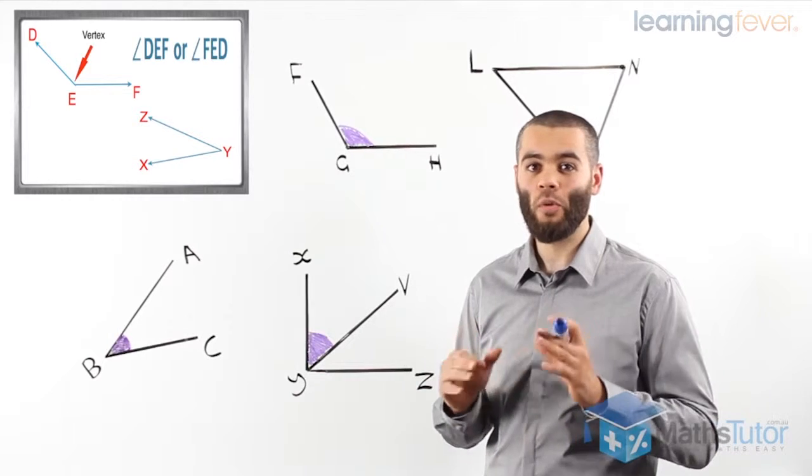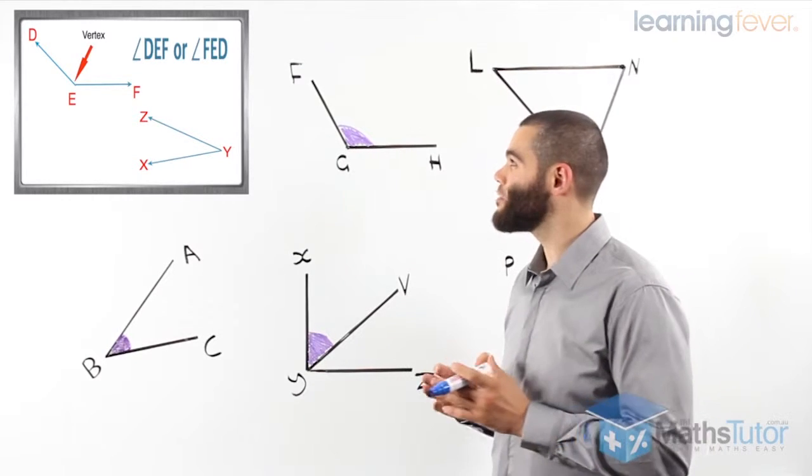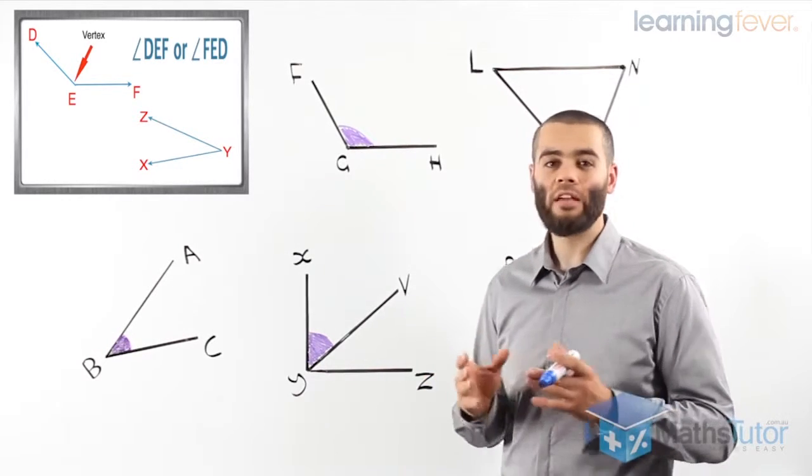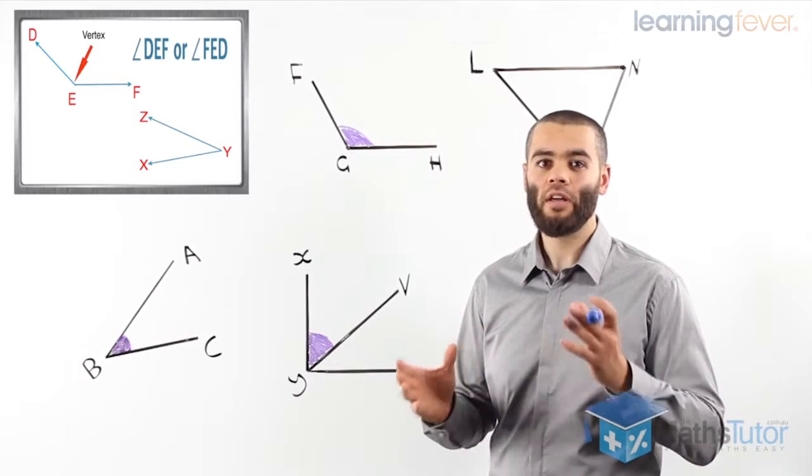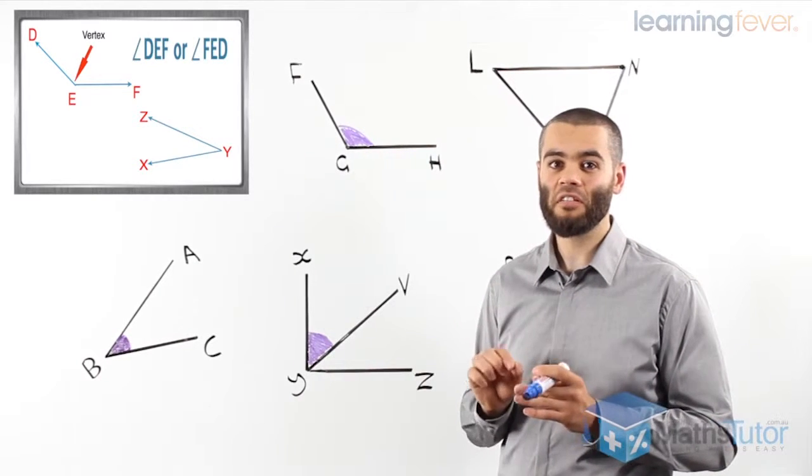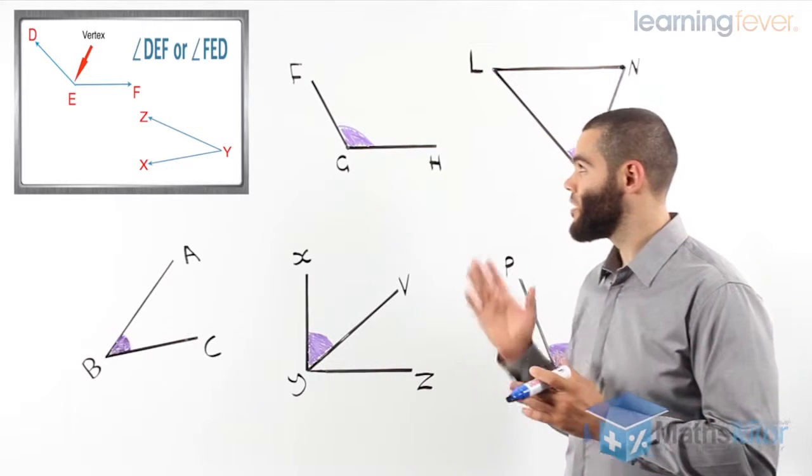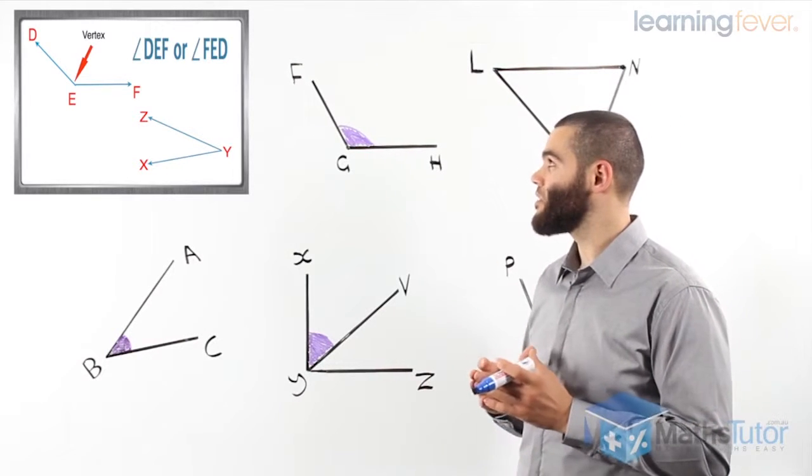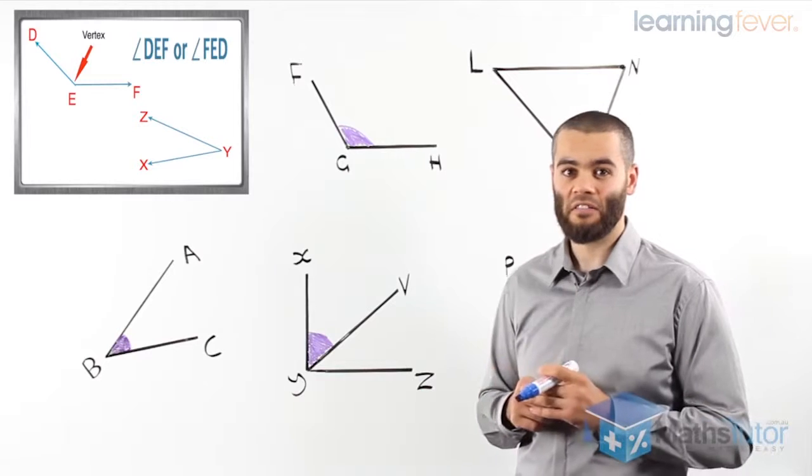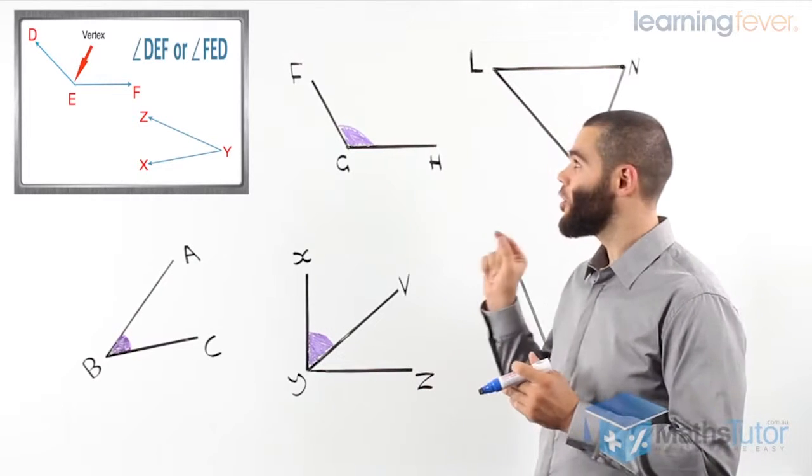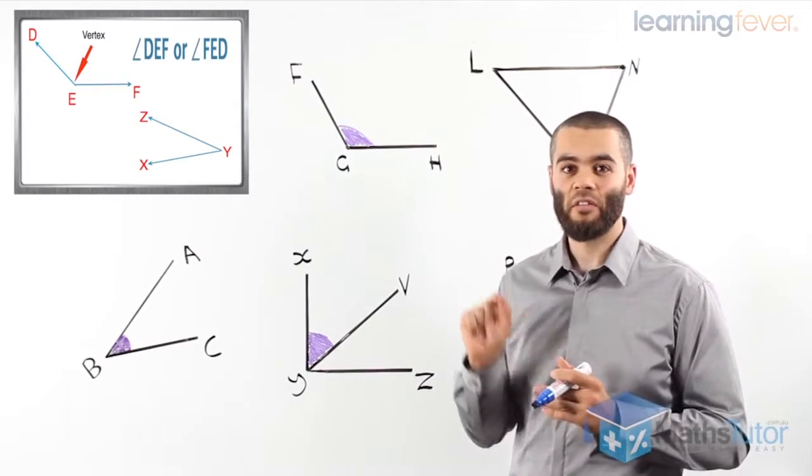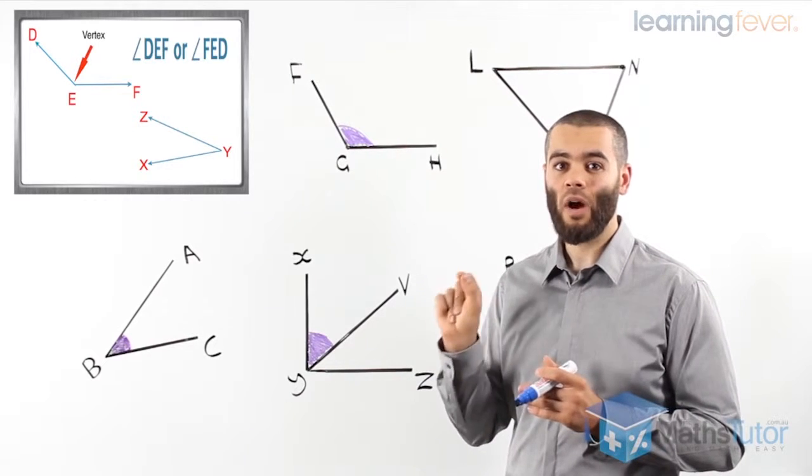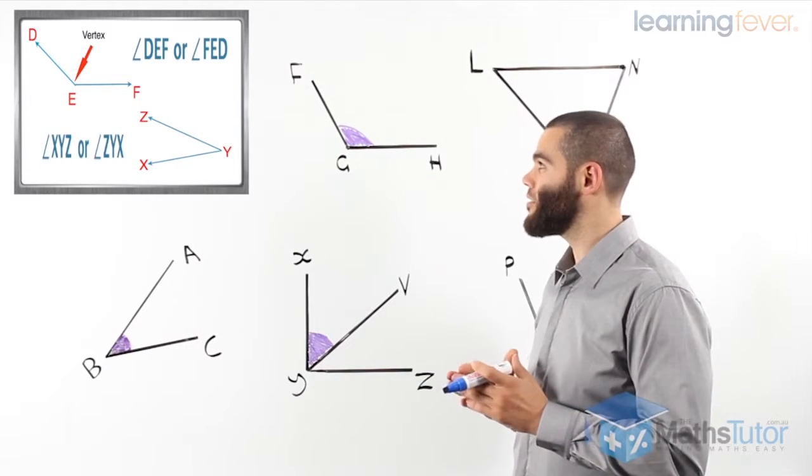So angle DEF, or angle FED. You can write it either way, it doesn't matter, as long as the vertex is in the middle. The other angle is marked with a Z, a Y and an X. Again, let's see, where is the vertex? The vertex has a Y, so the Y has to be in the middle. So we can write it this way, angle XYZ,